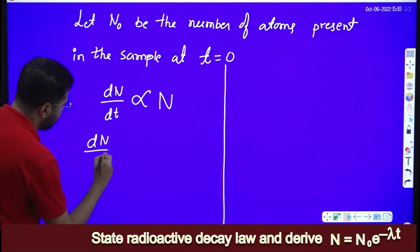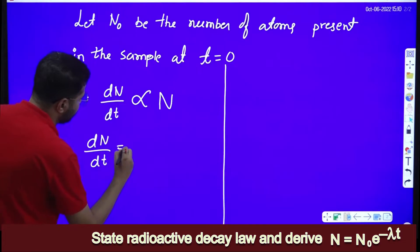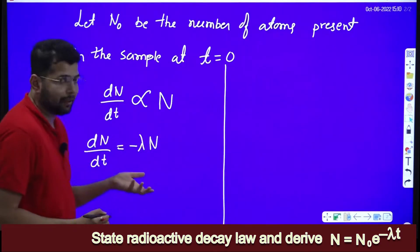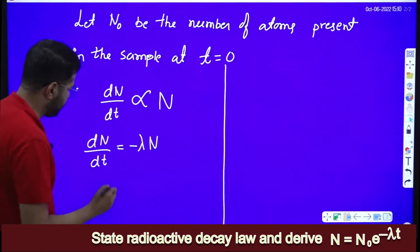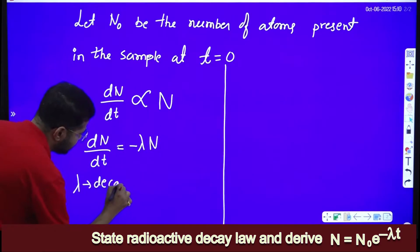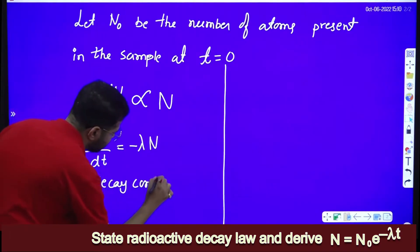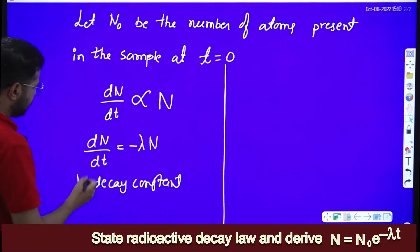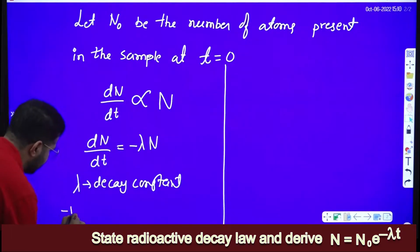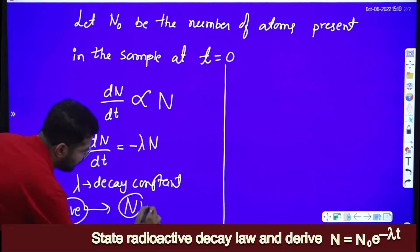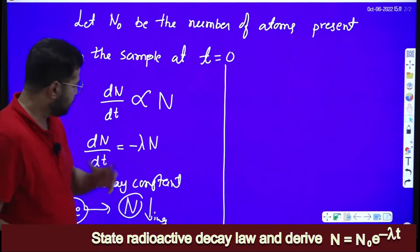We write dN/dt is equal to minus lambda into N. Here lambda we call it as the decay constant. This negative symbol indicates that N is decreasing, and that is why we have put this minus symbol.